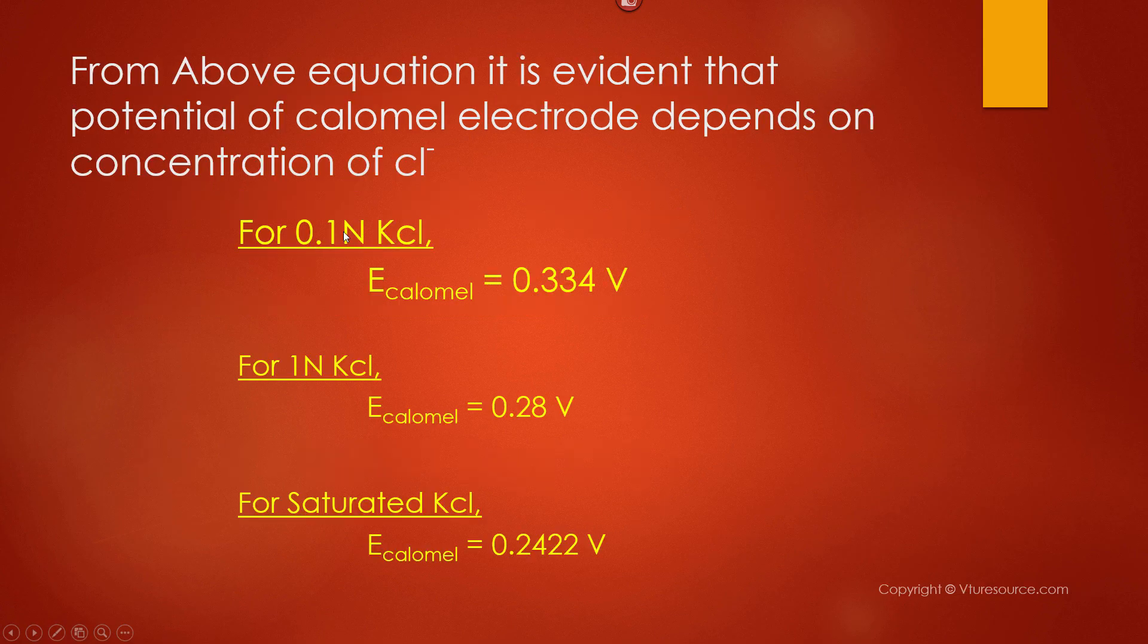For 0.1 N KCl, the electrode potential of calomel electrode is 0.334 volts. For 1 N KCl solution, the electrode potential is 0.28 volts. And if you are using saturated KCl in the calomel electrode, then the electrode potential is 0.2422 volts.